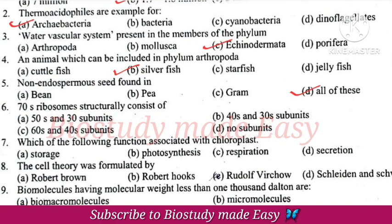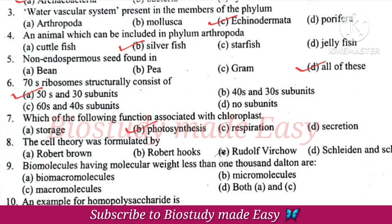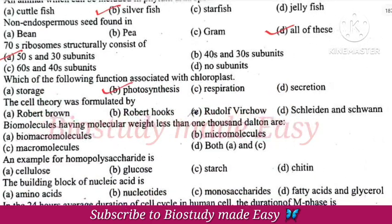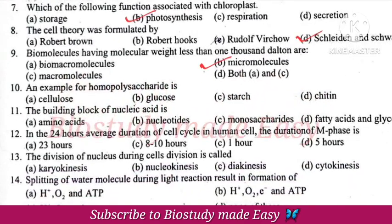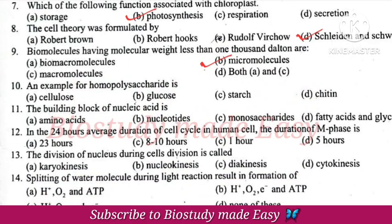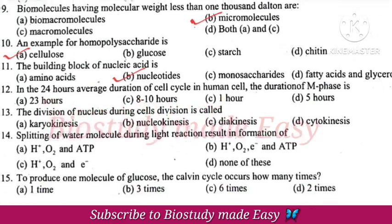Non-endospermic seed — all of these. 70S ribosomes consist of 50S and 30S subunits. Function of chloroplast is photosynthesis. Cell theory was formulated by Schleiden and Schwann. Biomolecules with molecular weight less than 1000 Dalton are called micromolecules. Example for homopolysaccharide is cellulose. Building block of nucleic acid is nucleotides.